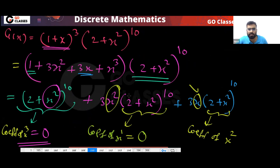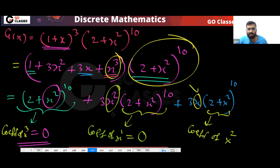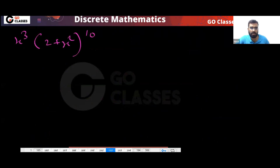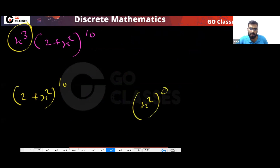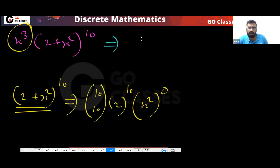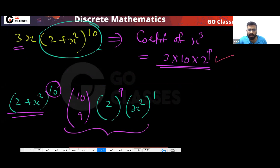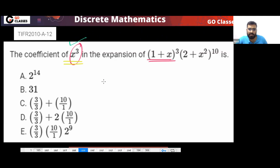For the x³ term: we already have x³ from the expansion, so from (2+x²)¹⁰ we want the constant term, meaning (x²)⁰, so 2 has power 10. That gives C(10,10) · 2¹⁰ = 2¹⁰. So the final answer is 30 · 2⁹ + 2¹⁰.